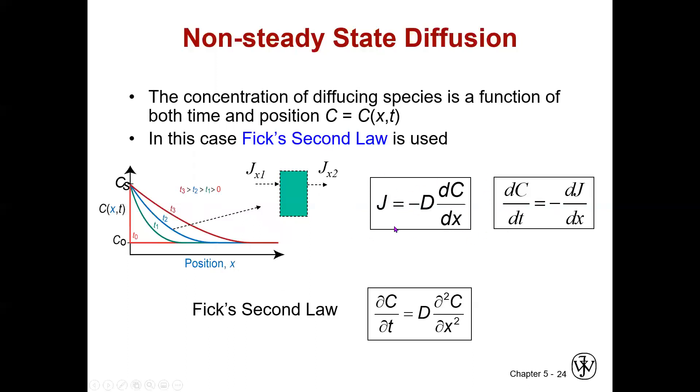So if we take Fick's first law and we apply to it a conservation of mass, which is that the concentration in time is equal to the negative of the gradient of the flux with position, Callister is trying to explain what that is here in this picture. If we go ahead and combine those, then we'll get Fick's second law. So dC/dt is equal to the derivative of J, which is Fick's first law. So take the derivative of that with respect to x, and I'll get the second derivative here of concentration with position. And we made the assumption that D did not depend on position, so that was pulled out front. That's not always the case, but it'll be the case for the problems that we're looking at here.